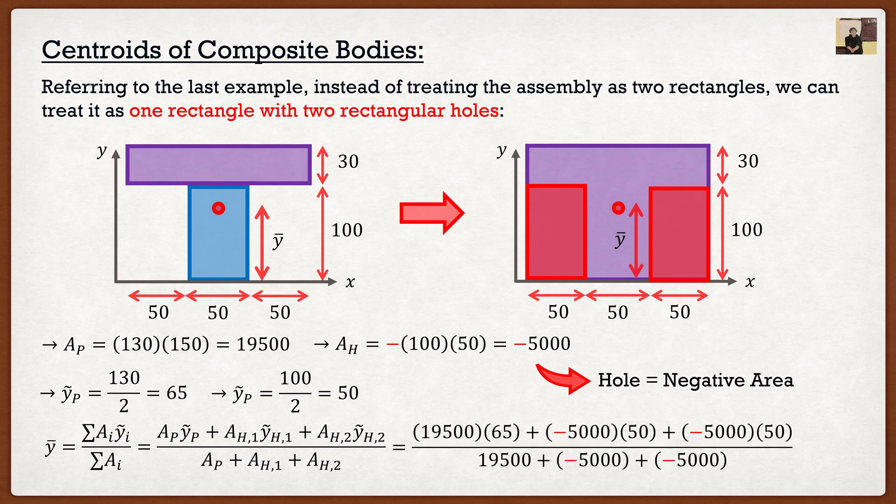And again, when we input these into our equation, whenever we have holes, we always have a negative sign on the area. And if you were to substitute this in, you get 80.8, which is exactly the same as before. Isn't this nice? It's actually beautiful. So again, what they'll try to do to throw you off the trail in exams is give you a hole, but you're going to laugh at them say, I know exactly what to do. I treat it the exact same as before. The only difference is it has negative area.